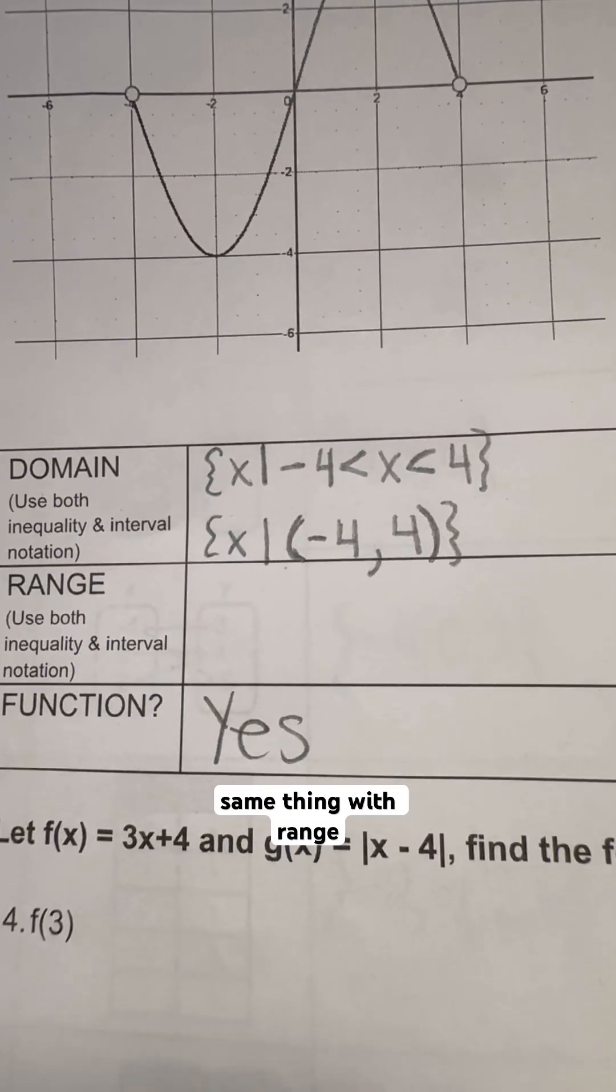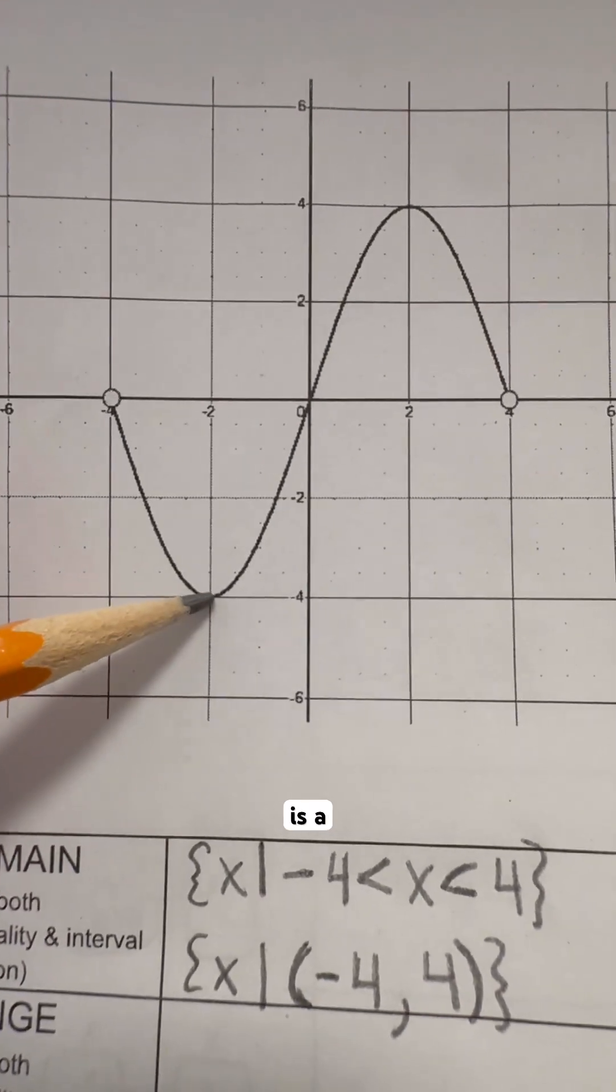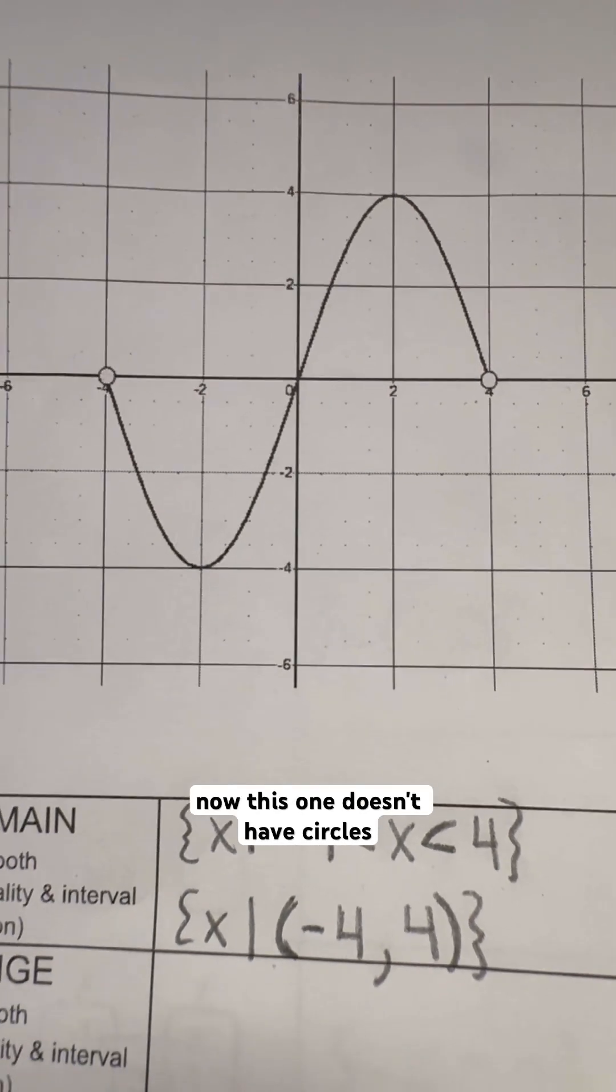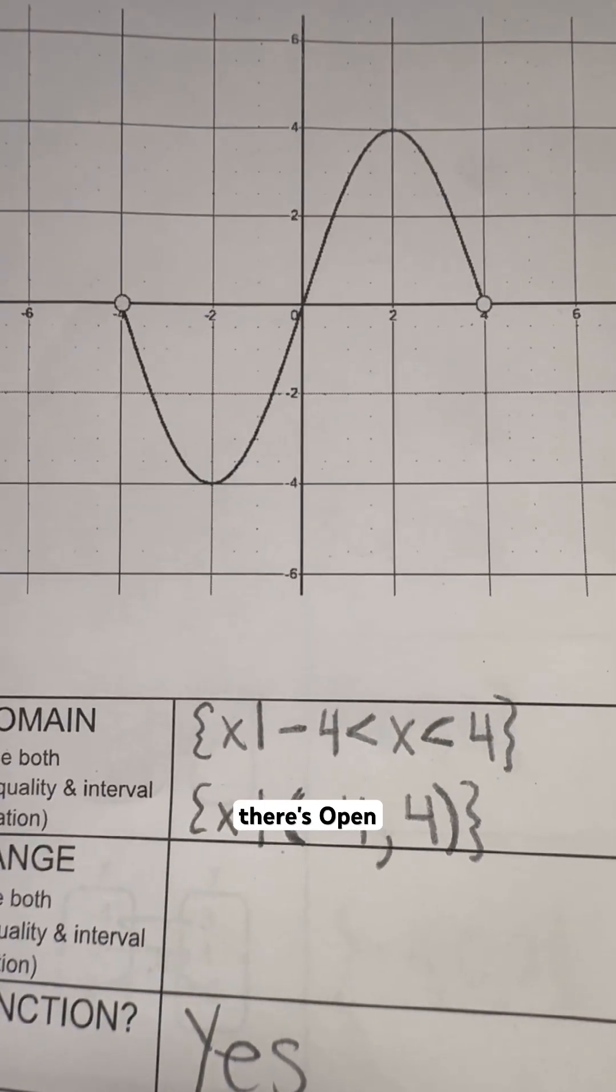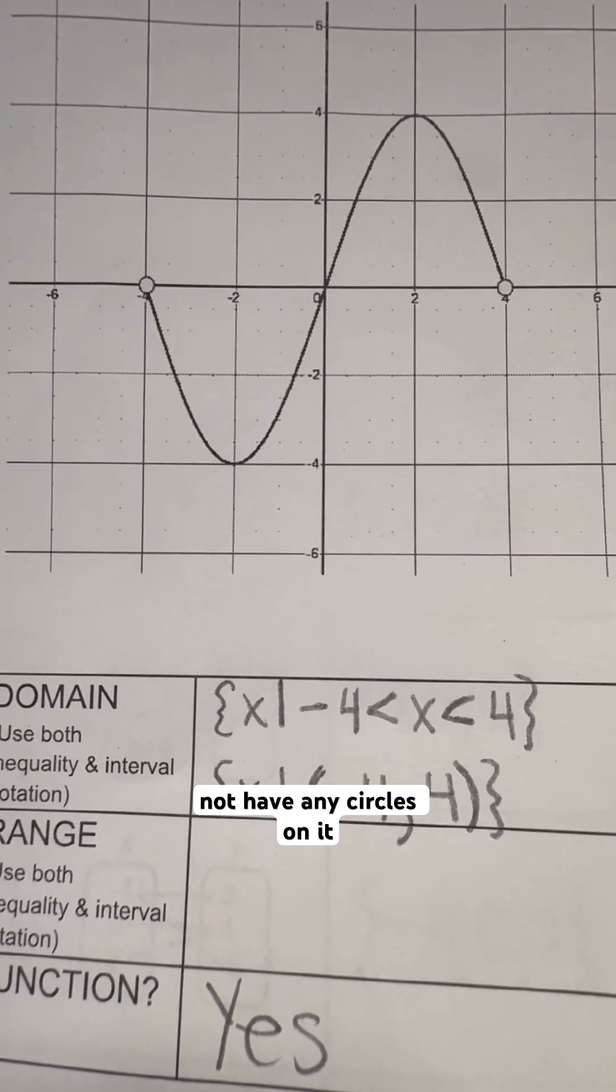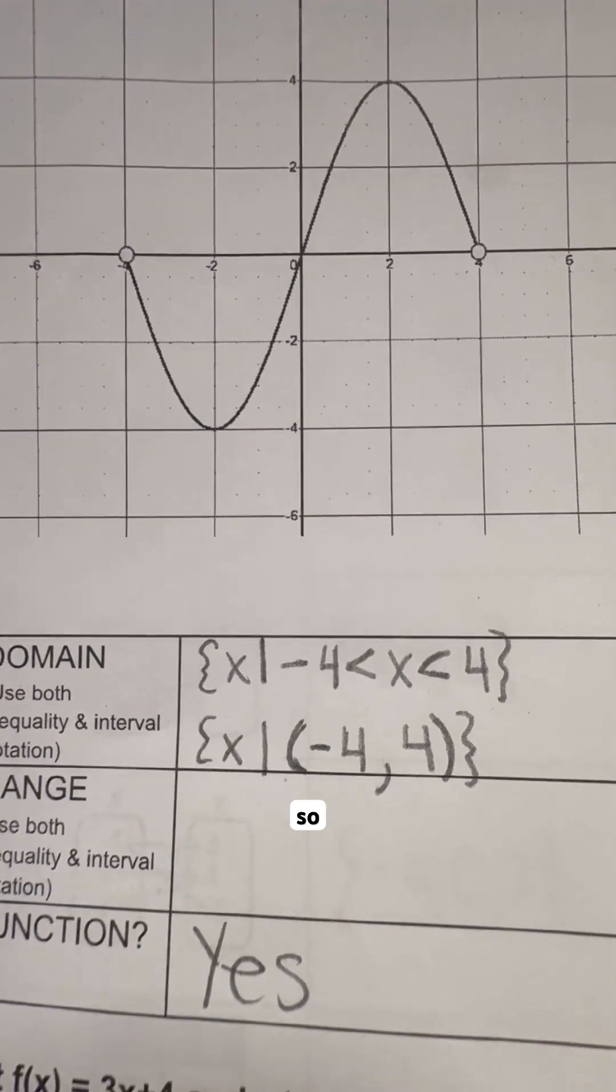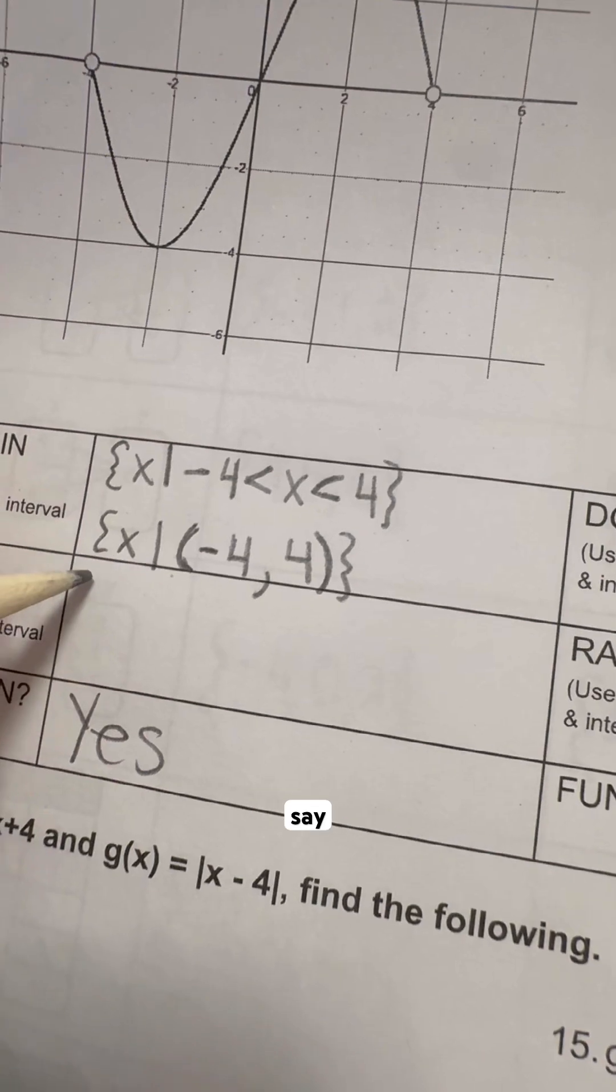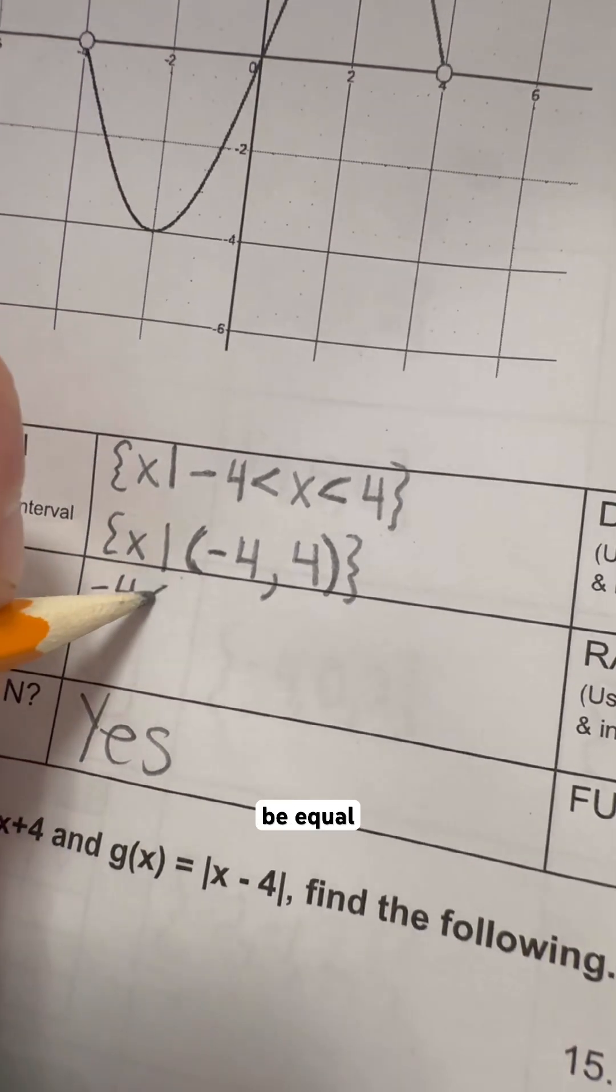Now we're going to do the same thing with range. We see that the lowest number it stops at is negative four and it goes as high as four. Now this one doesn't have circles on it, but that doesn't mean anything. Obviously, if there's open circles, it's pretty clear. If it does not have any circles on it, then that means it's including it unless otherwise specified. So since that is including, it's on that line, we are going to say that negative four can be equal to it.